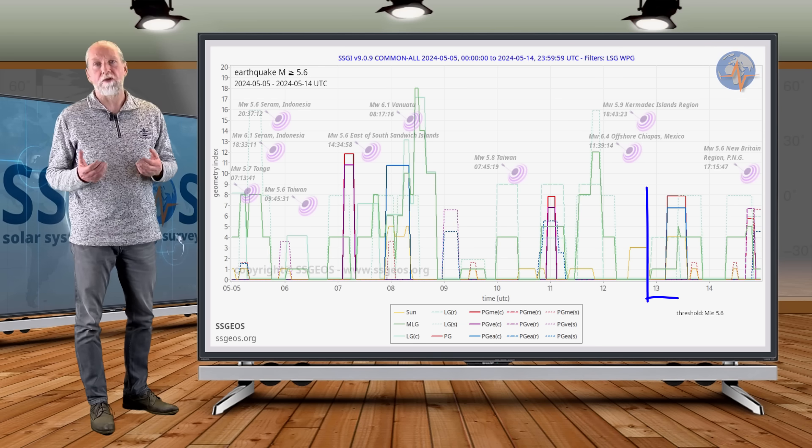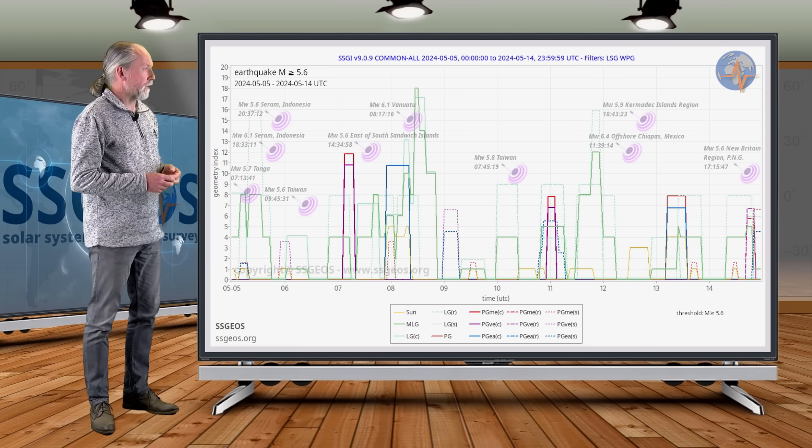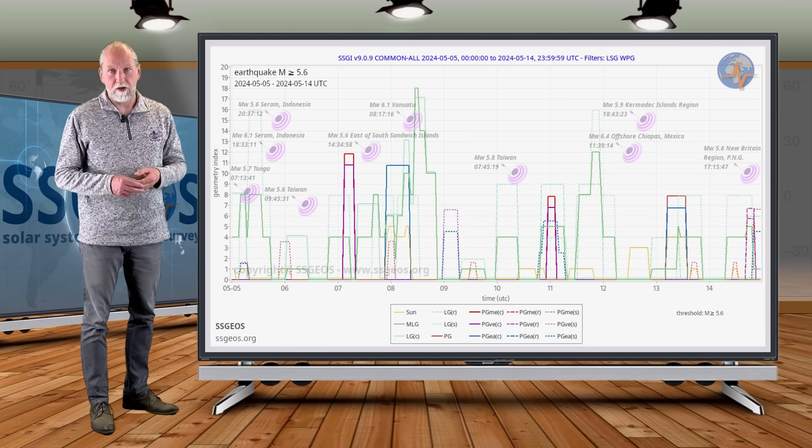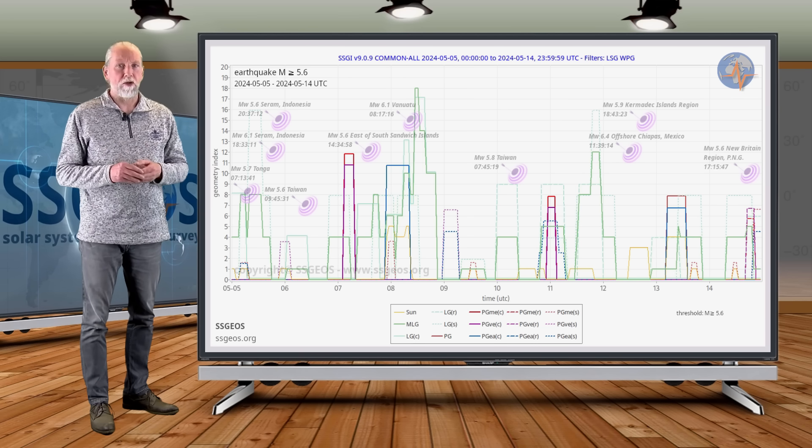Then we had Earth in conjunction with the Sun and Uranus on the 13th. That resulted in a 5.6 at the New Britain region. Not all that much, but Earth in conjunction with the Sun and Uranus, that should never be underestimated.